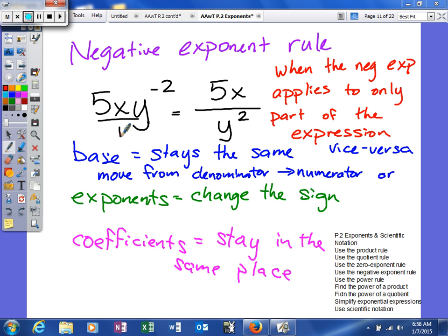And what we do is our base is still going to stay the same. But we're actually going to move it from the numerator to the denominator or the denominator to the numerator. So the value of the base doesn't change, we just move it. So anytime you have a negative exponent, that's what you're going to do.